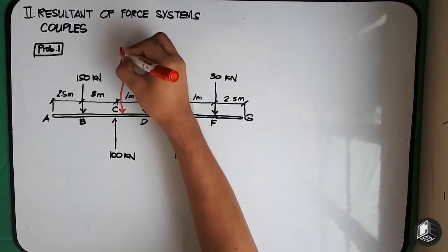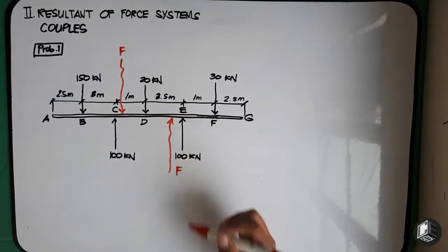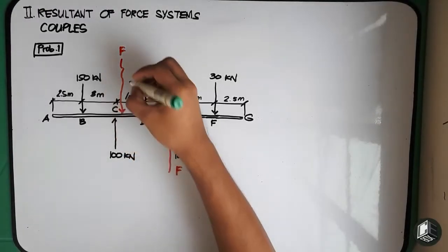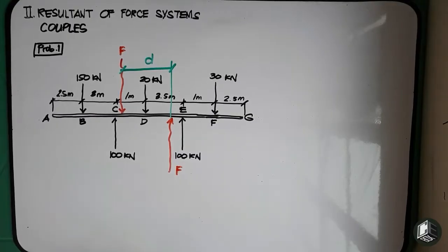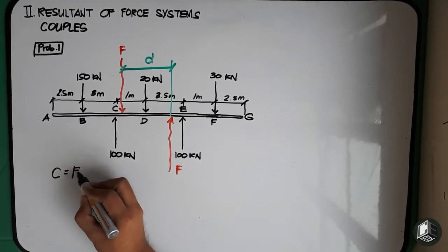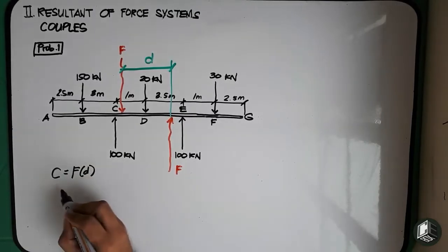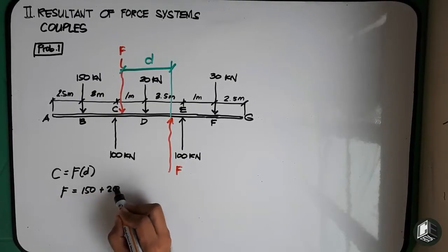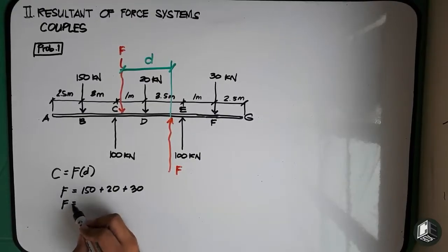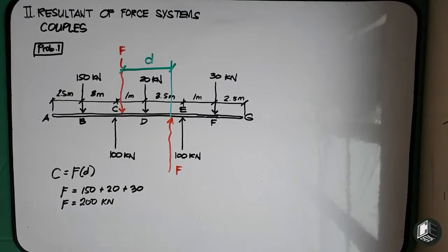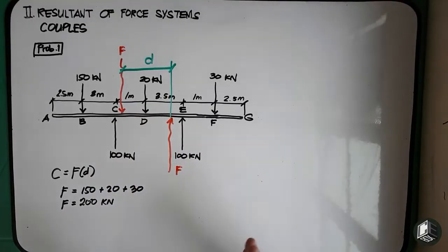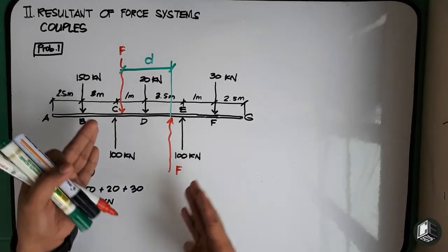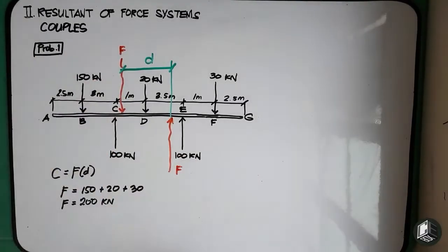We have force f here, and this is another force f. This force f has a distance d. The couple c is equals to f multiplied by d. The force f equals 150 plus 20 plus 30, so f equals 200 kN downward. For the upward forces, 100 plus 100 equals 200 kN. Therefore, checking the resultant, there will be a zero resultant since our two forces are equal to each other and opposite in direction.